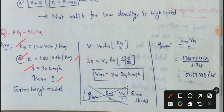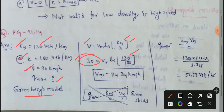We will measure the maximum volume as per Greenberg's Model using the formula: V equals V_maximum times ln(k_max divided by k). Substituting the values — k_max is 130, k is 100, and speed is 30 km/h — we solve for V_maximum. The maximum speed comes out to 114.34 km per hour.